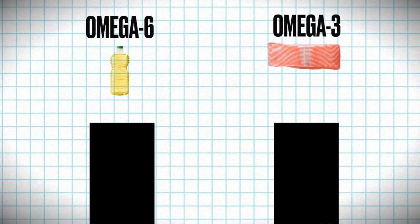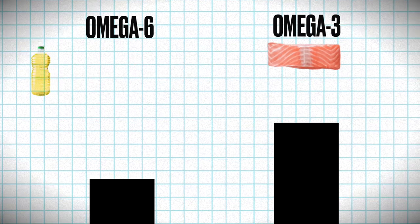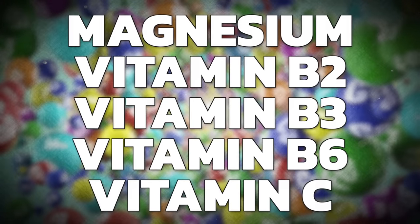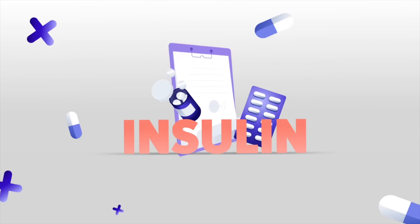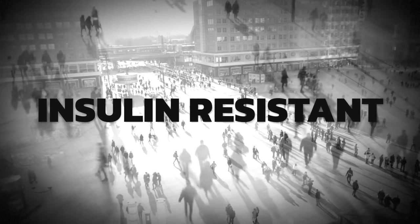We do need omega-6 as well, but not in such high quantities, and from a much higher quality source. The cofactors that allow this conversion to happen include magnesium, B2, B3, B6, vitamin C, and — interestingly — insulin. The great majority of people are insulin resistant, which means they're deficient in effective insulin signaling, so they won't have the cofactor to allow this conversion to happen.